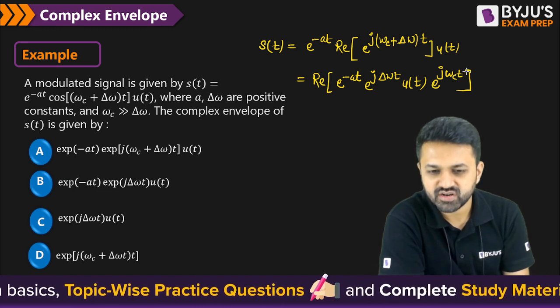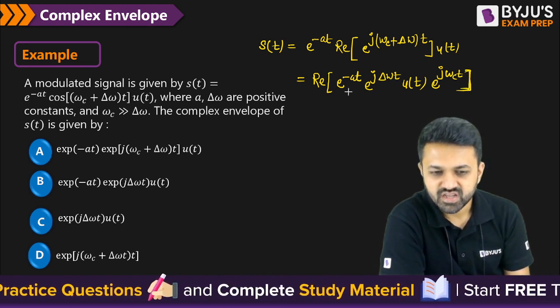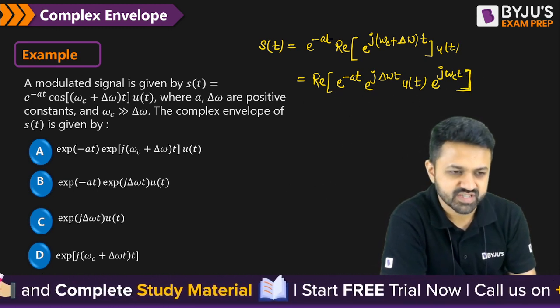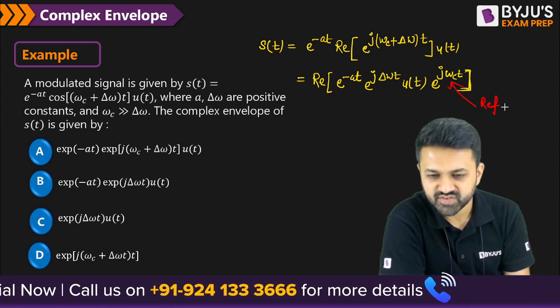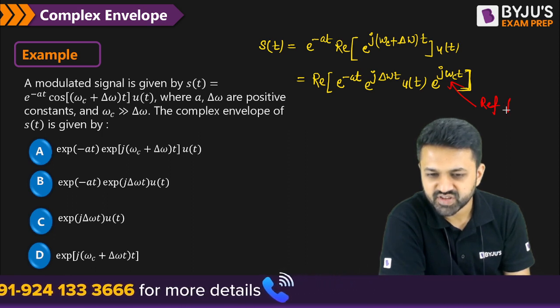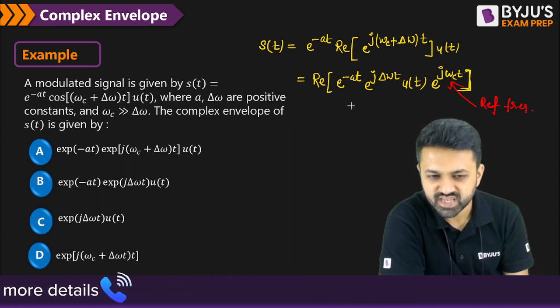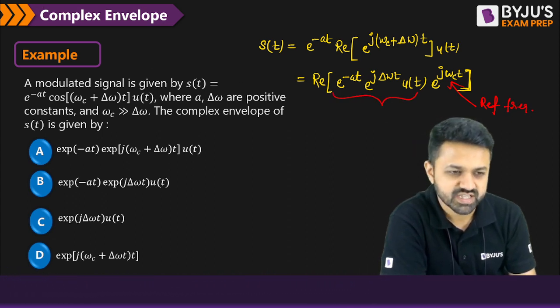So according to the two methods we discussed, whatever is the reference frequency, just mark it. So this is the reference term. So this is the reference term or your center frequency, you will say. So this is the reference frequency or the center frequency. The remaining will be called as the complex exponential.